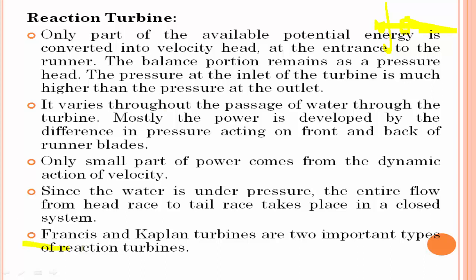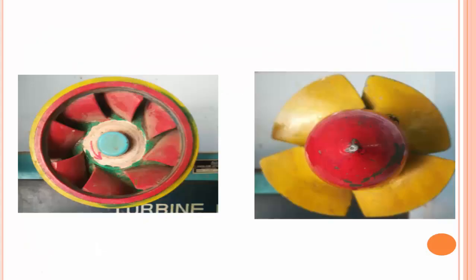Examples of reaction turbines are the Francis turbine and the Kaplan turbine. The Francis turbine is applicable for medium head and the Kaplan turbine is applicable for low head. High head application uses the Pelton wheel turbine; medium head uses the Francis turbine; low head uses the Kaplan turbine.